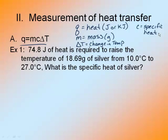So let's look at this example. It says 74.8 joules of heat is required to raise the temperature of 18.69 grams of silver from 10 degrees Celsius to 27 degrees Celsius. What is the specific heat? Like any mathematical problem, the first thing you should do is write your formula. Until you get good at this, write down what you know.